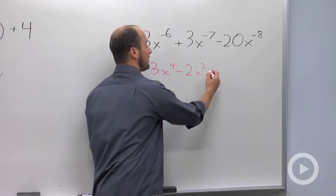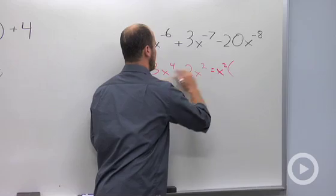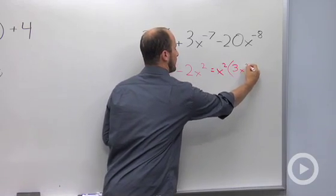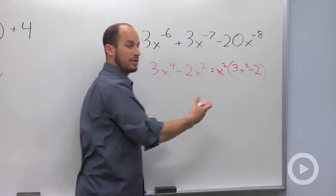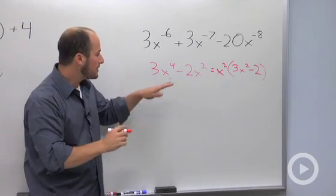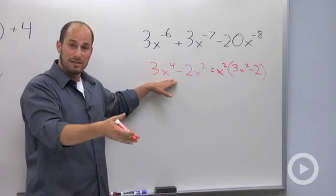You look for the smallest power of x that you have. So in this case, you factor out the x squared, leaving you with 3x squared minus 2.